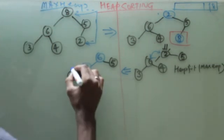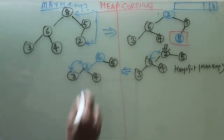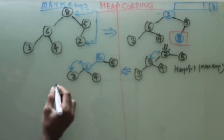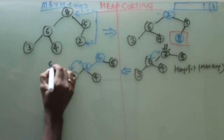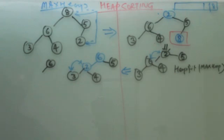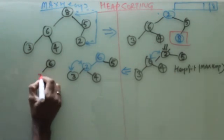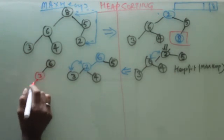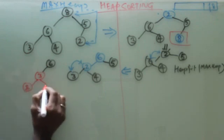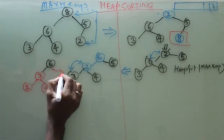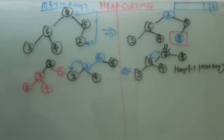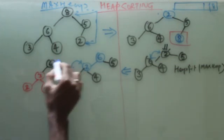Now I can say that we can exchange this. So it will become 6, 5, 3, 4, and 2. Now I have created a maxheap.